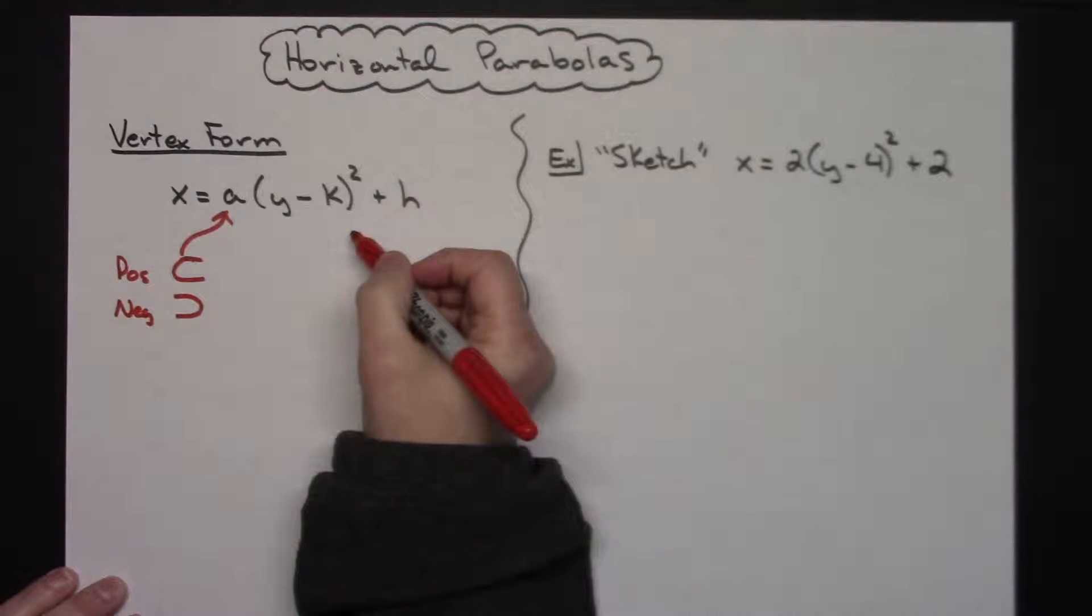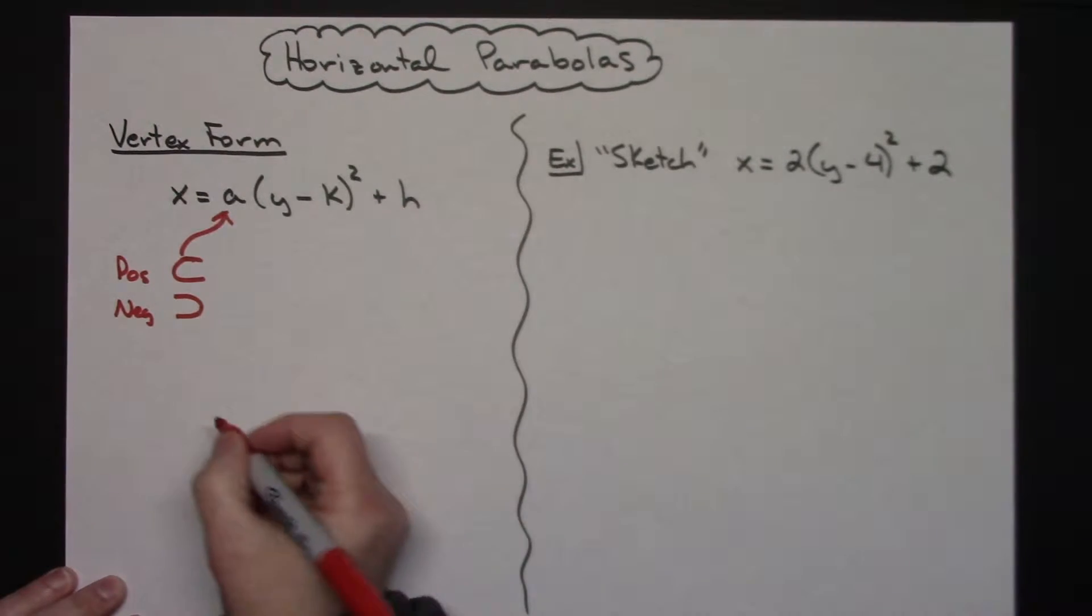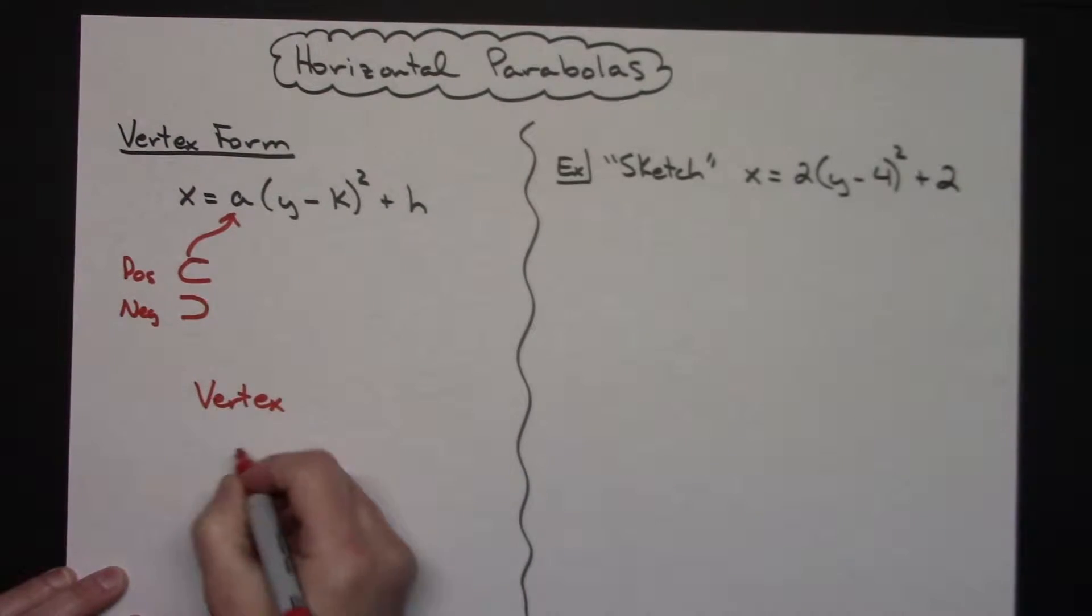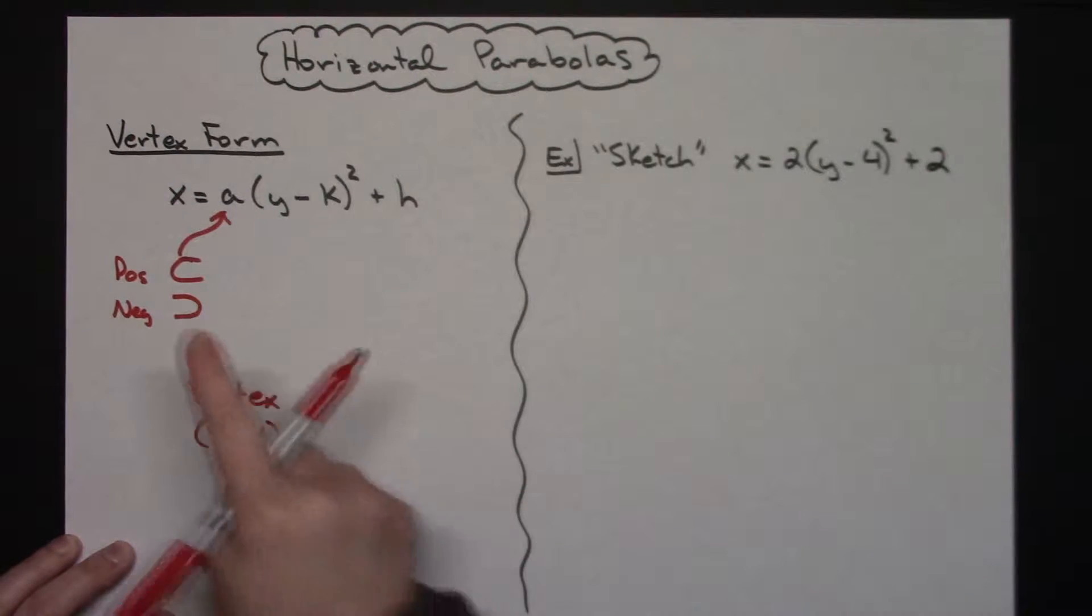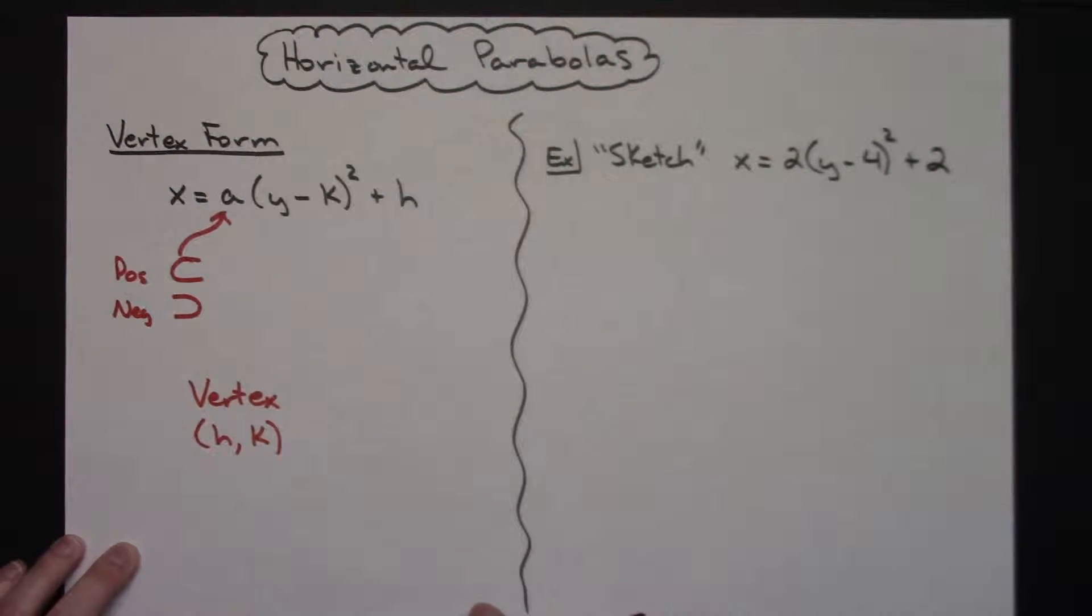Now, as with our other vertex form of a vertical parabola, we had our vertex located at h k. Now, your vertex is still going to be at h k. But in vertex form, the h and k's are in different spots.